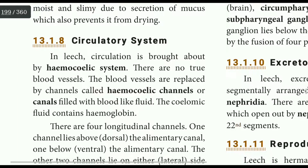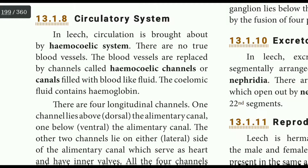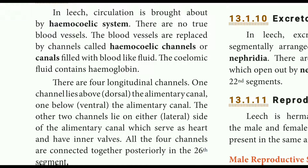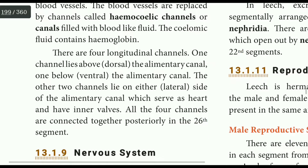The circulatory system is a haemocoelomic system. Instead of blood vessels, the leech has haemocoelomic channels. The fluid in these channels contains haemoglobin. There are 4 channels: an alimentary channel and two lateral channels. The heart acts on the inner volume up to the 26th segment, and these channels are interconnected.